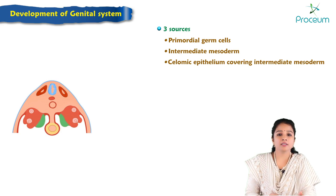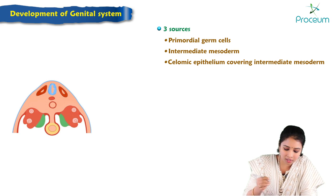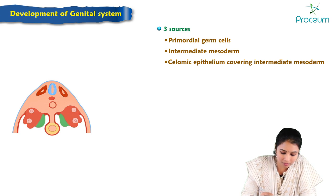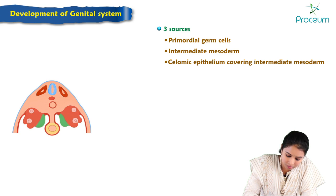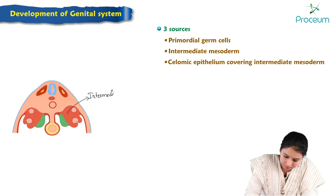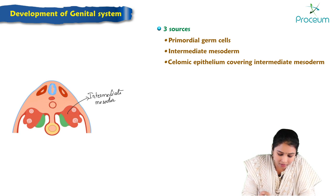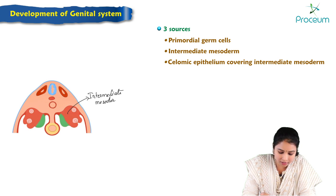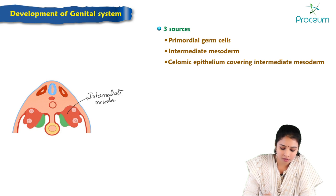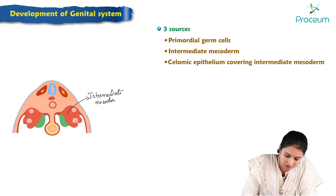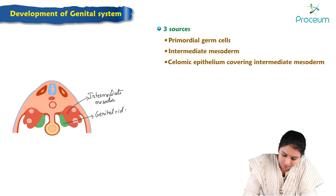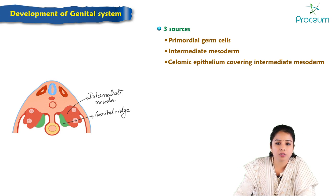Here is a schematic cross-section showing the intermediate mesoderm — this bulge is the intermediate mesoderm. It forms the urogenital ridge, which is an elevation. The medial part of the urogenital ridge will later form the genital ridge.